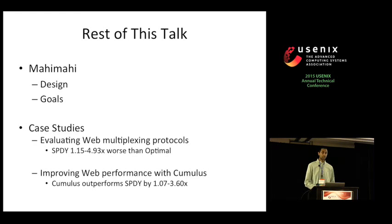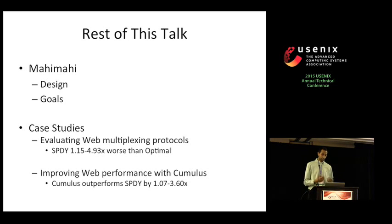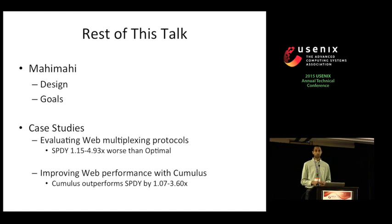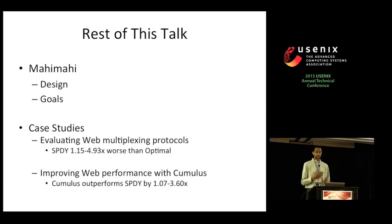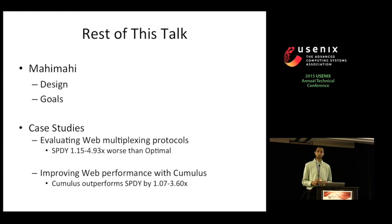In the rest of this talk, I'll first describe each of MahiMahi's components and explain how they collectively achieve these three goals. Then I'll switch gears and discuss several case studies performed using MahiMahi, including an evaluation of web multiplexing protocols and a new system called Cumulus, whose goal is to improve web performance over long delay links.